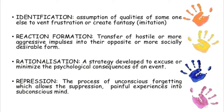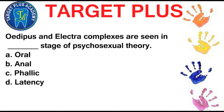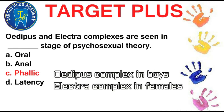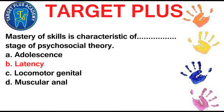ID is based on the pleasure-pain principle. The ID is the portion of mind that contains the unconscious drive for pleasure and destruction. Oedipus and Electra complexes are seen in the phallic stage of psychosexual theory. Children in the phallic stage develop feelings of attraction to the opposite-sex parent. Mastery of skills is characteristic of the latency stage of psychosocial theory. Children in this stage go to school, learn about people, culture, values, skills, their capacities and interests. They like to participate and compete to improve their skills.